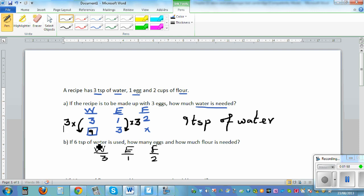If 6 teaspoons of water is used, so this is 6. So the question is how many eggs and how much flour. So we want to find this and also this. So you ask the question, 3 times what is 6? This is becoming how many times bigger? Well, you should know 3 times 2 is 6.